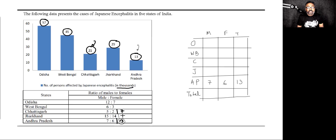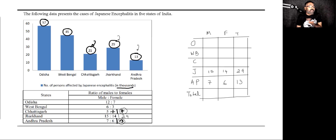Let's add these two together: that is 29. I can already see 29 here. Therefore, for Jharkhand that will be 15 male and 14 female. For Chhattisgarh, I've got the ratio summing to 7 and the total is 21 — 7 times 3 is 21 — so you multiply everything by a factor of 3: male is 15, female is 6, giving us 21.